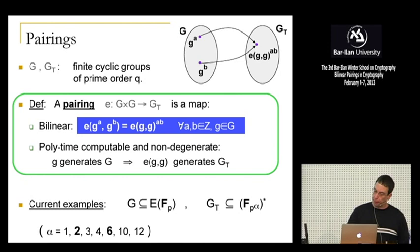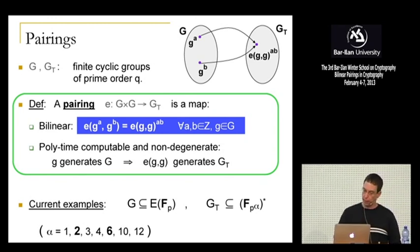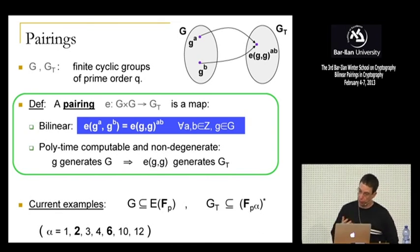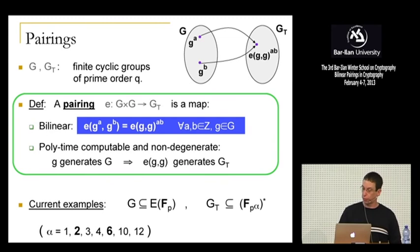The key property of the pairing is that if you apply it to G^a and G^b, then a and b come out of the parentheses — you get the exponent a·b on the other side. The pairing must be polynomial-time computable, and it's very important that it be non-degenerate: if little g generates the source group G, then pairing g with itself gives a generator of the target group G_T.